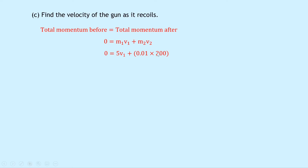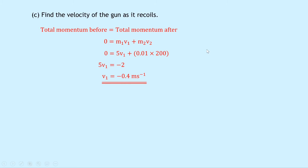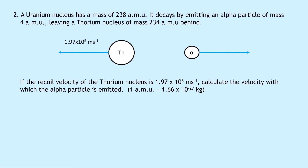Taking the term over to the left hand side and rearranging, we get 5v1 = −2. Dividing both sides by 5 gives v1 = −0.4 meters per second. Notice we expect a negative answer because the gun moves to the left, and we assume motion to the left is negative and motion to the right is positive.